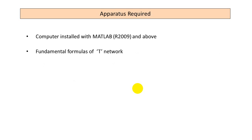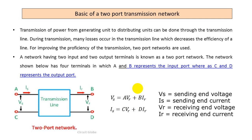These are two important parameters: the fundamental formulas of your T network are very much required, and a system installed with MATLAB 2009 or any version from 2009 onward is also mandatory. This I have explained in the previous laboratory. Any transmission network or transmission line has two ends — one is the sending end and the other is the receiving end. I will take a color pen to explain once again so that it will be easy for you to understand.